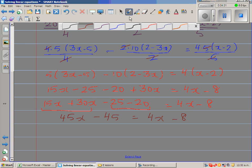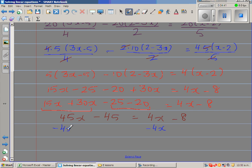I want to bring the x's on the left-hand side and the numbers on the right-hand side. I want to get rid of this 4x, so I'm going to subtract 4x from both sides. I want to get rid of negative 45 from the left side, so I'm adding 45 to both sides.